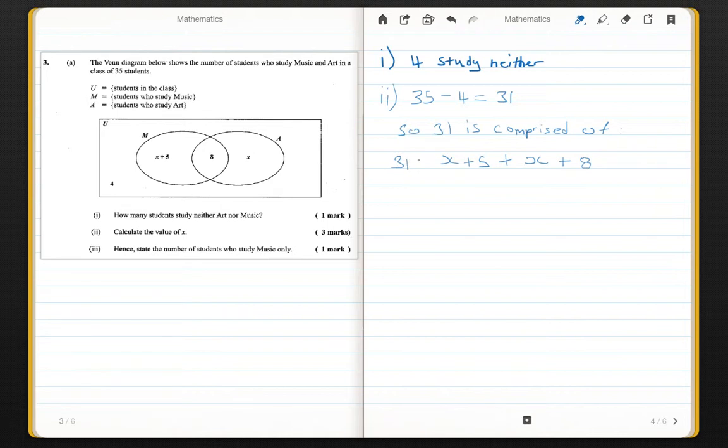31 equals 2x plus 13. Now, 18 which is 31 minus 13 is equal to 2x, and 9 is equal to x.